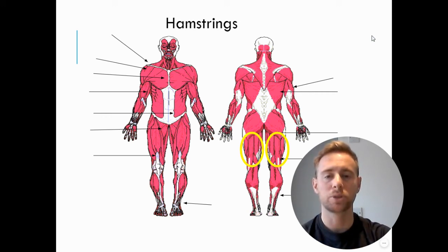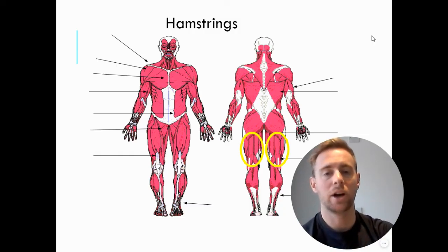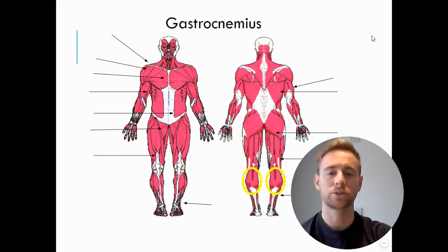Then the final muscle you need to know, between the back of our knee and our Achilles, we have our gastrocnemius. That's all the muscles that you need to know for GCSE PE.